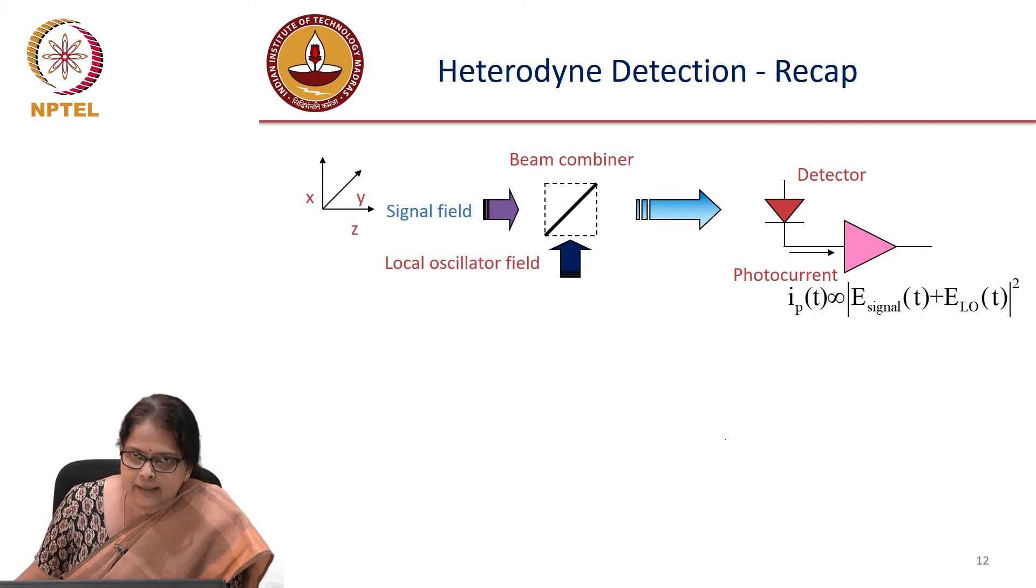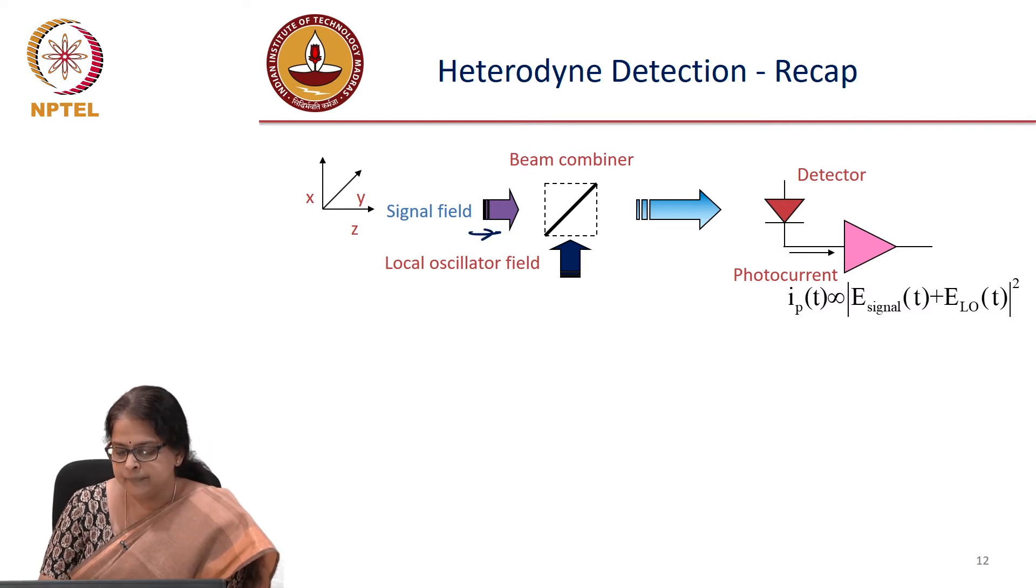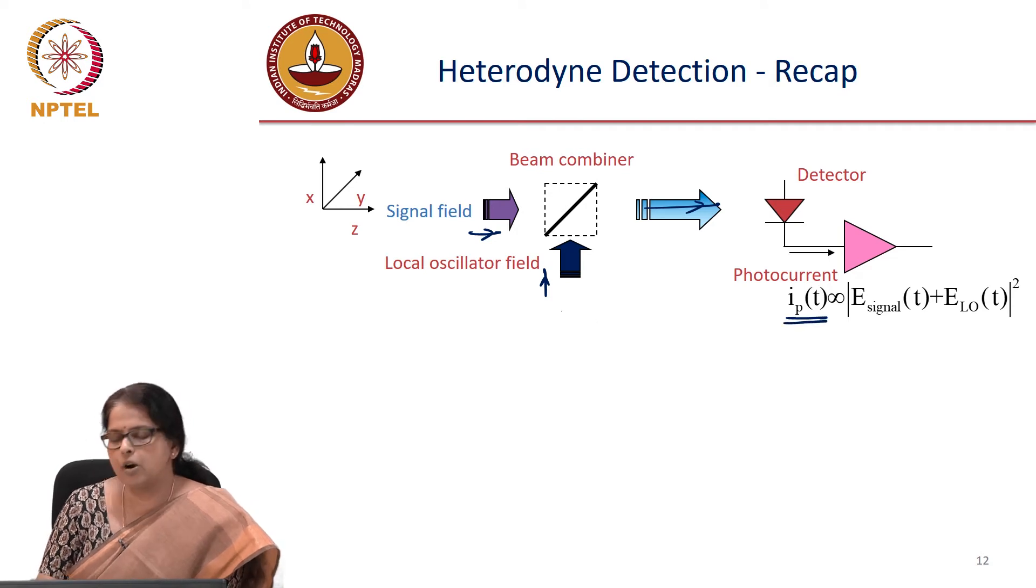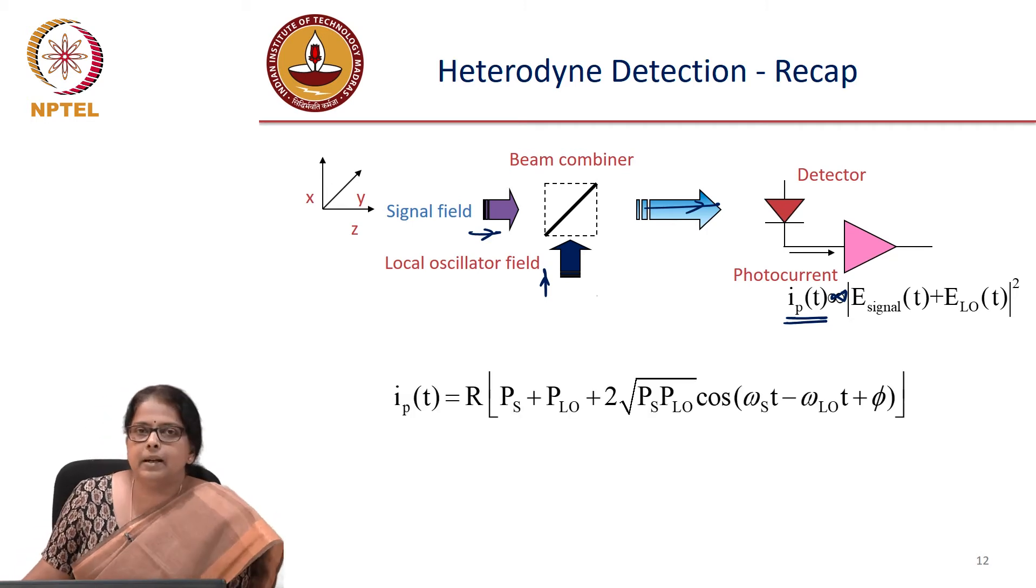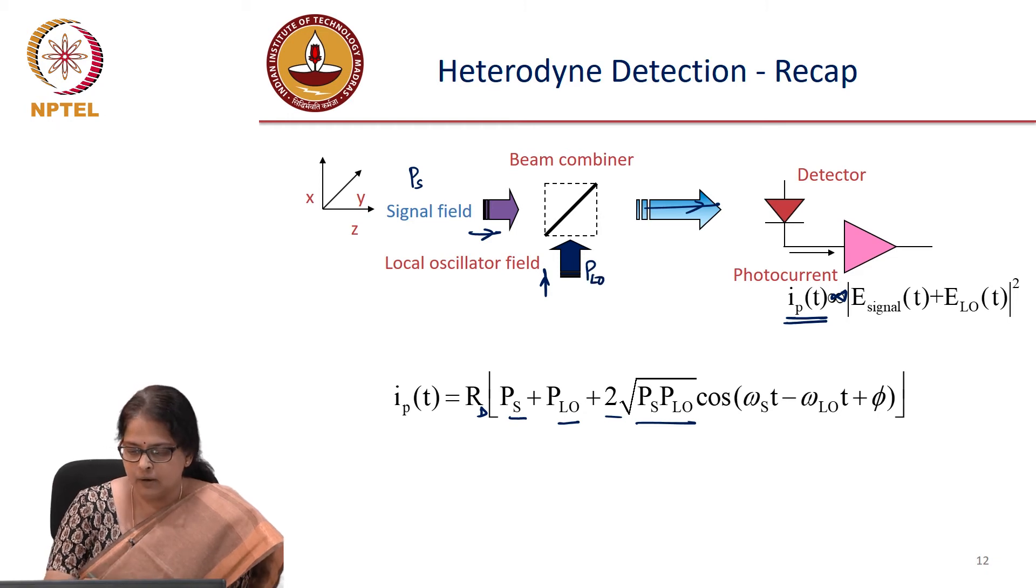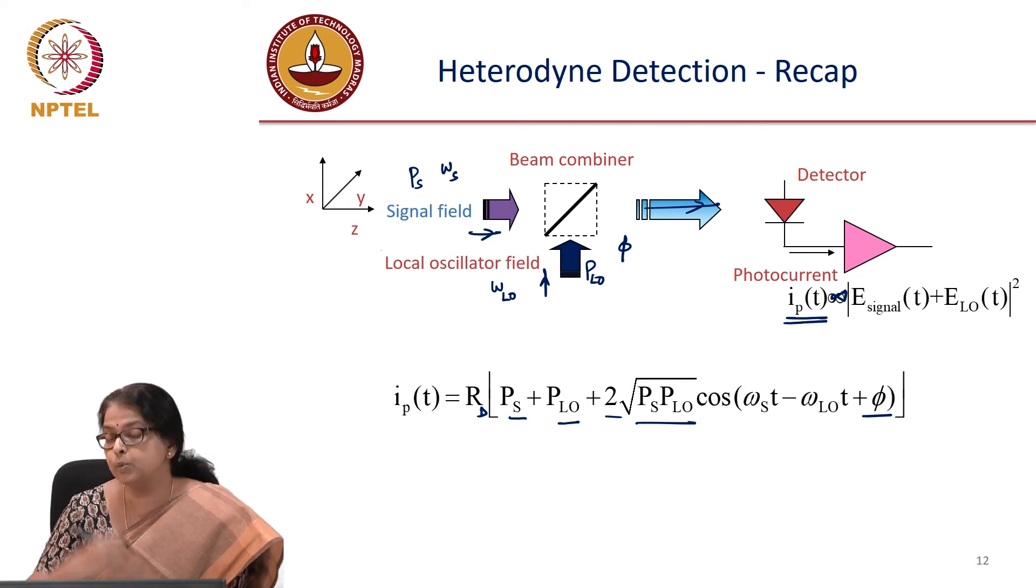The answer is you should do the heterodyne setup. So we will do a quick recap of the heterodyne setup that we have seen before. You have your incoming signal, you have your local oscillator, you combine them with a beam combiner. And then the combined beam is allowed to fall on the detector. And the detector photocurrent is proportional to E signal plus E_LO mod square. We did the expansion of this and we found that the output current is responsivity R_d times P_S plus P_LO plus 2 root P_S P_LO, where P_S is your signal power, P_LO is your local oscillator power, omega_s is your signal frequency, omega_LO is your LO frequency and phi is the phase difference between the signal and the local oscillator.